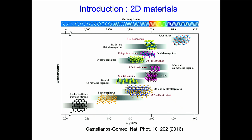Back to the topic: two-dimensional materials. After the discovery of graphene, many other materials were exfoliated because layered materials can be peeled off quite easily with the Scotch tape method. A whole zoo of different classes of two-dimensional materials have been synthesized. I cite the recent review from Castellanos-Gomez, who ordered the different classes according to their band gap, which is important for optical applications.